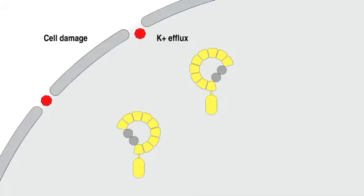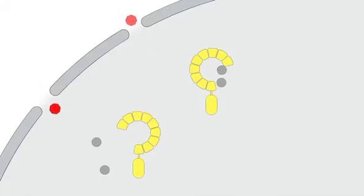For reasons that aren't exactly clear, the efflux of potassium from the cell triggers dissociation of HSP90 from the LRR domain of NALP3, producing a free monomer of NALP3 in the cytoplasm.